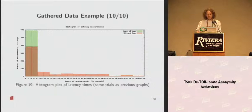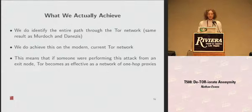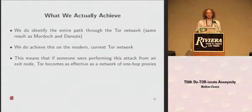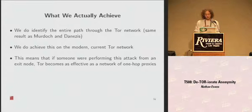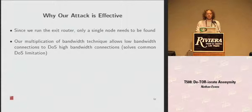So what exactly do we achieve? We're not directly de-anonymizing clients — that's not our attack. But just like Murdoch and Danezis in 2005, we're able to discover all three Tor routers used in the circuit, which reduces a user's anonymity to that of a one-hop proxy, or a network of one-hop proxies. Unlike Murdoch and Danezis, our attack works on the current large-scale Tor network. We only need to discover one router because we're running the exit router and know two already. The bandwidth-multiplying effect of long circular routes is dangerous because it allows even low-bandwidth users to perform our attack and also DOS any Tor server at will.